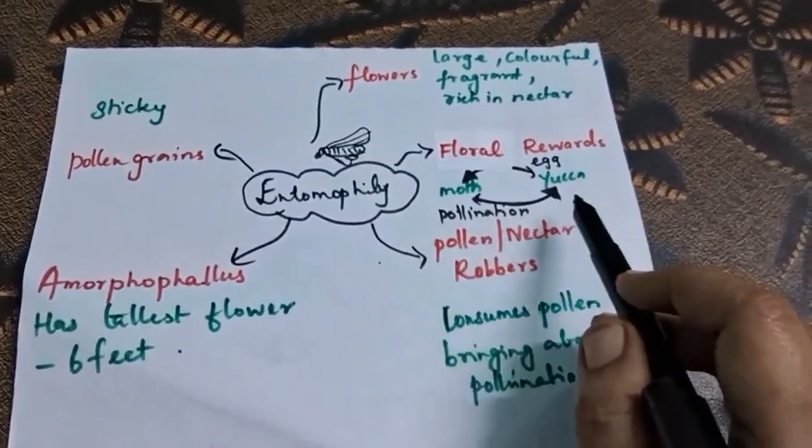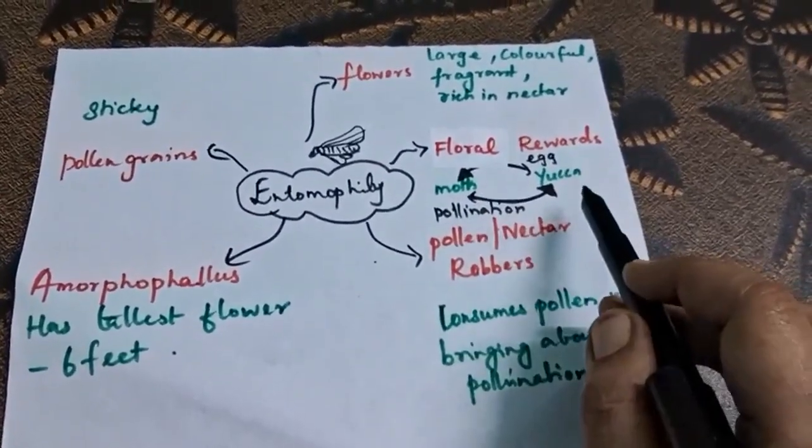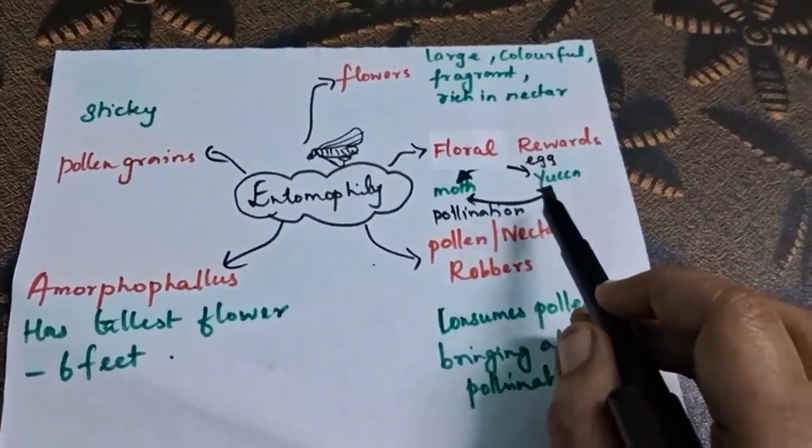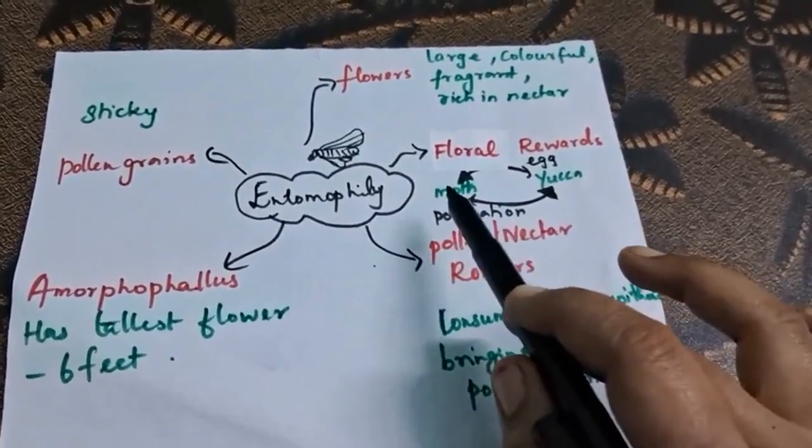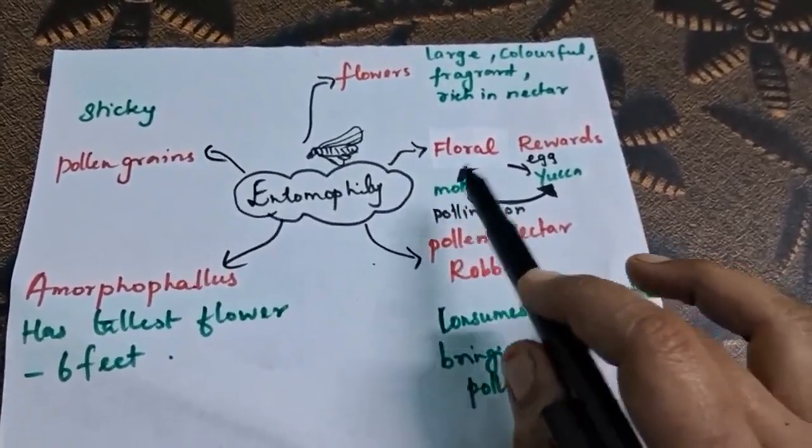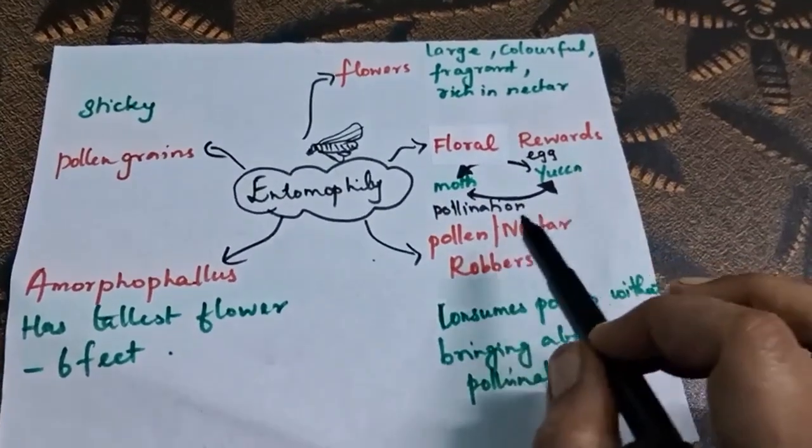That is pollination. The flower gives space for laying eggs to insects, whereas the insects reciprocate by pollinating the flowers.